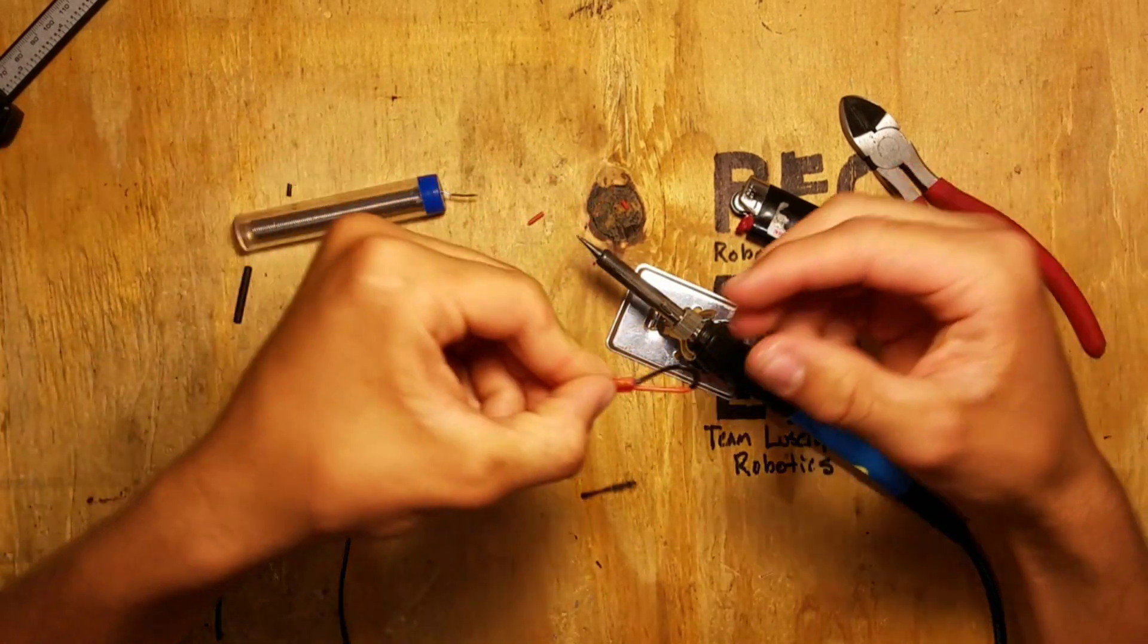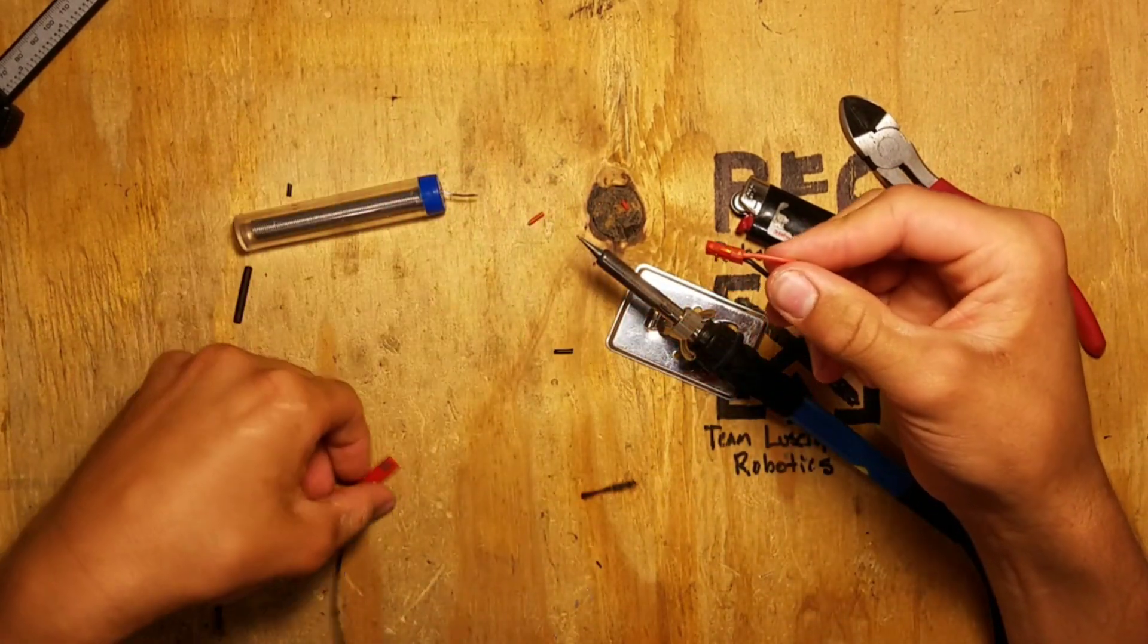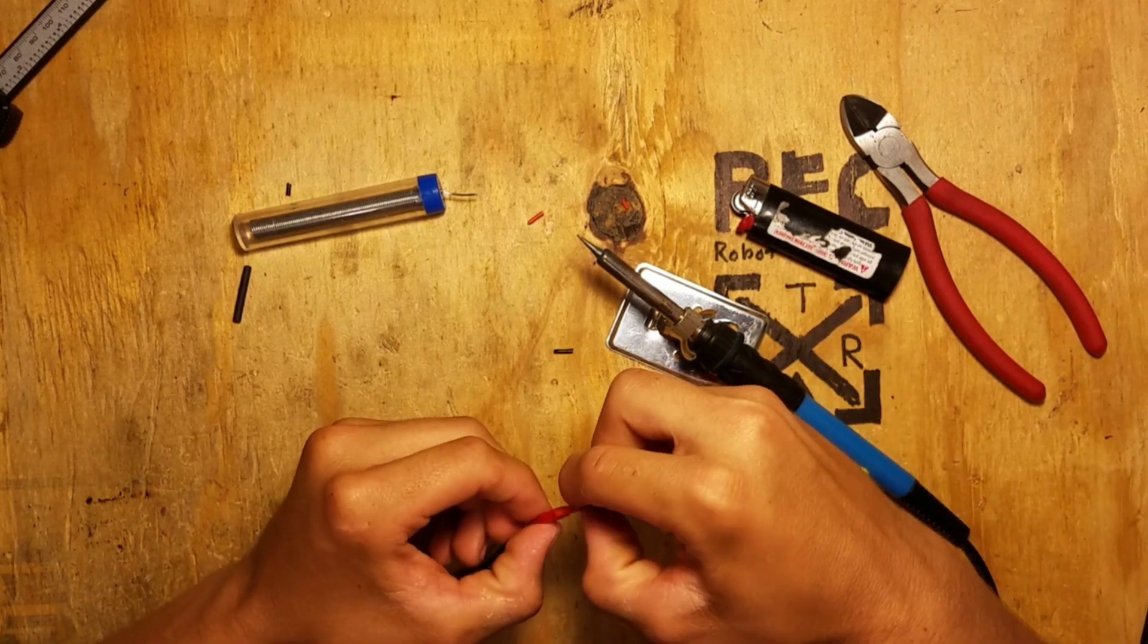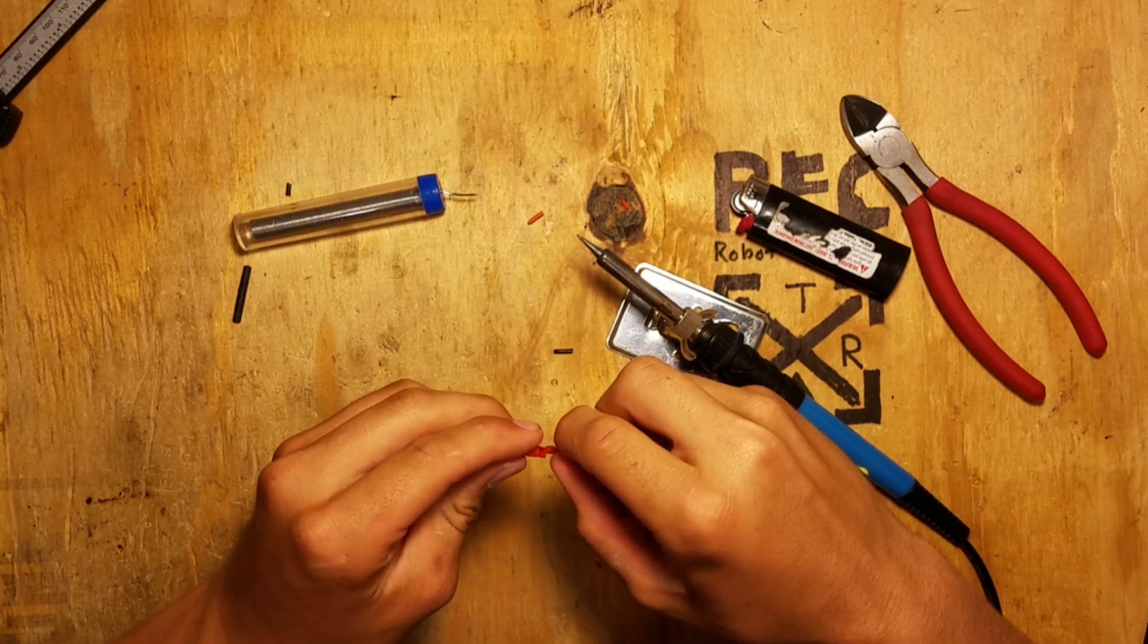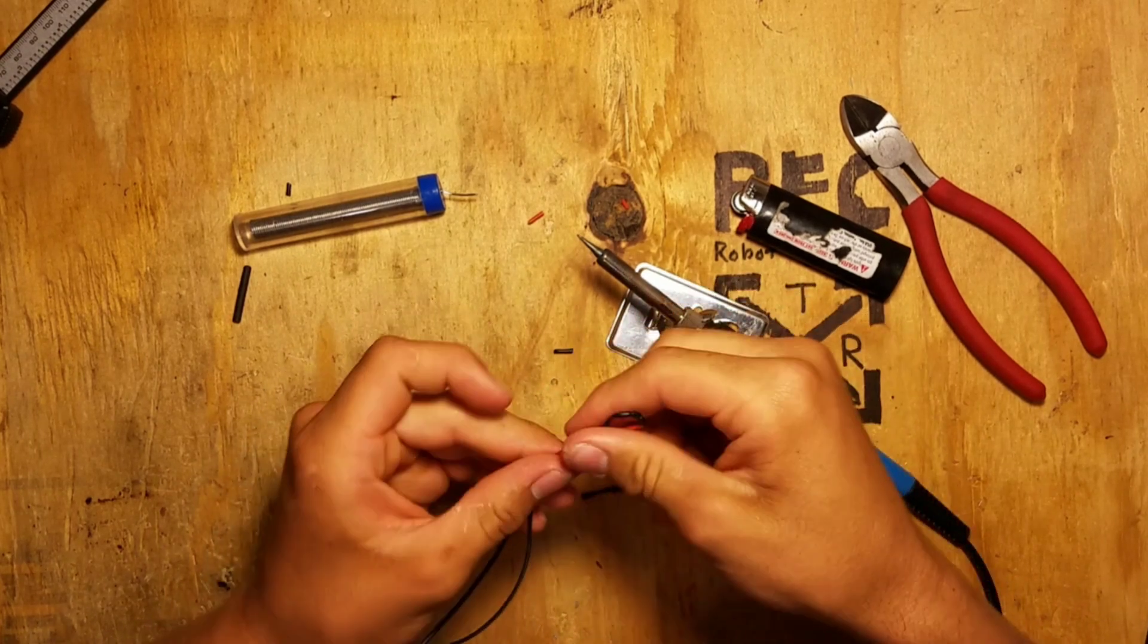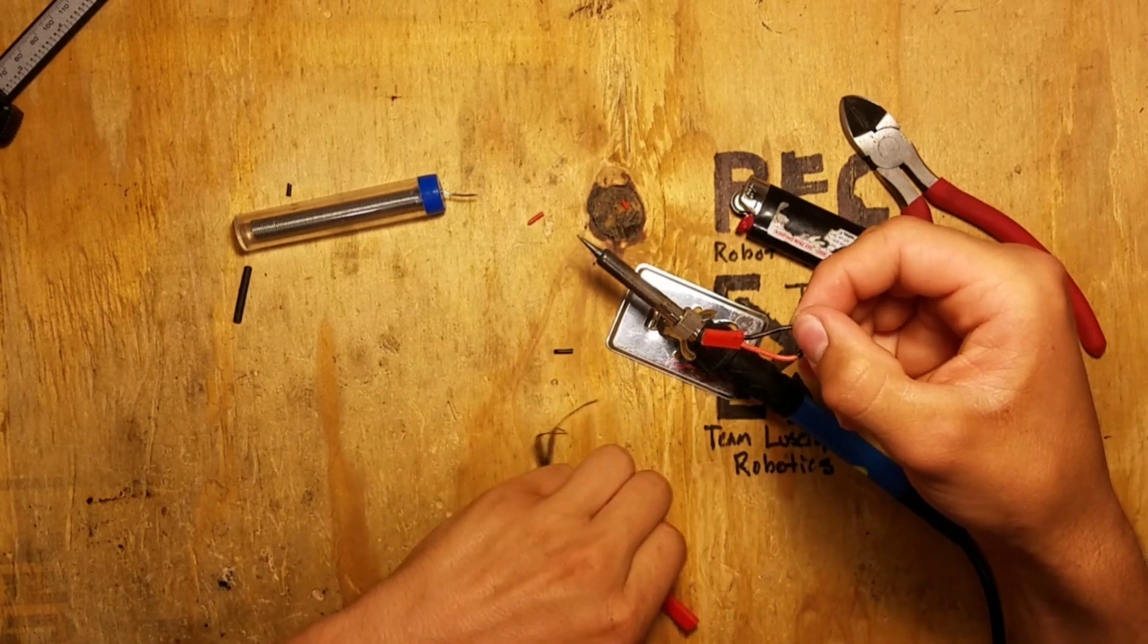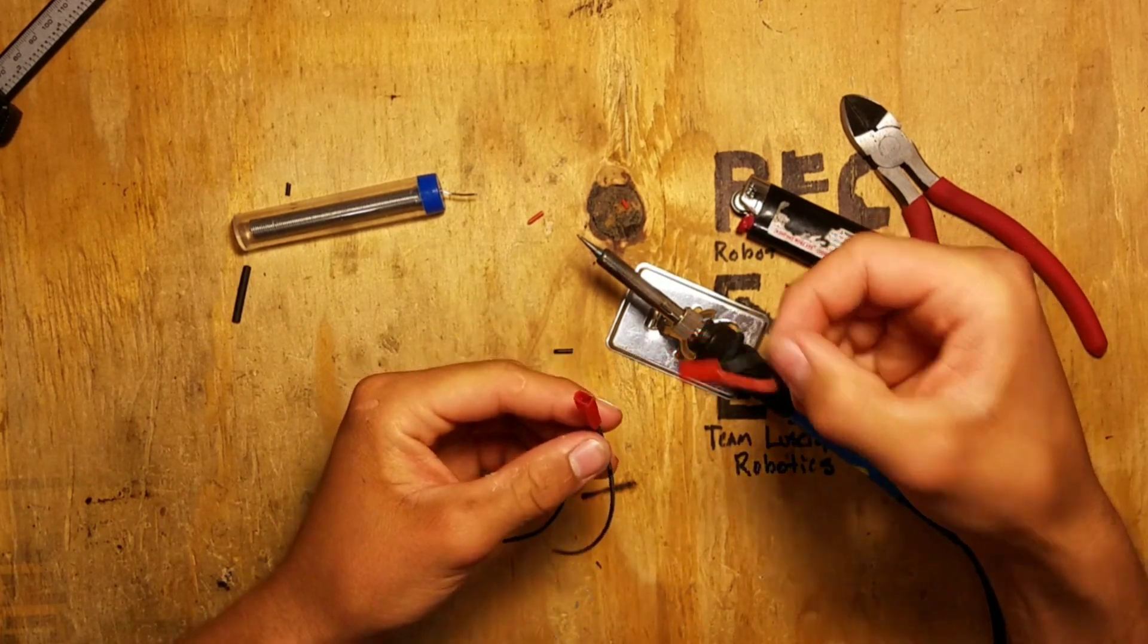And now it is done. All you have to do is plug it into the other JST and you have your circuit. It doesn't matter if you use the male or female, either one will serve the same purpose. I just chose to use the male.